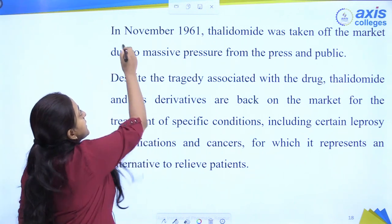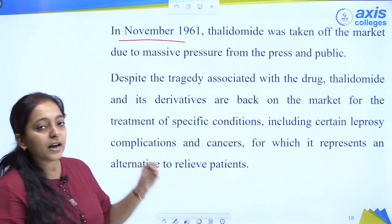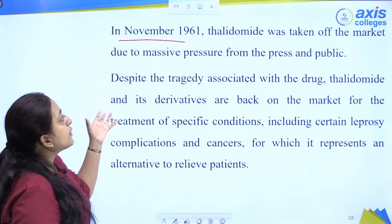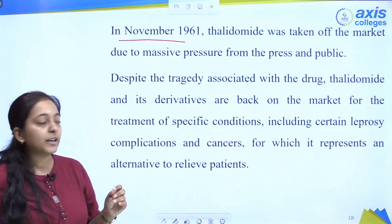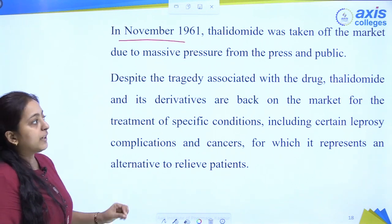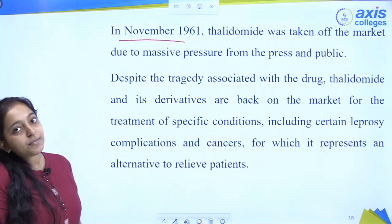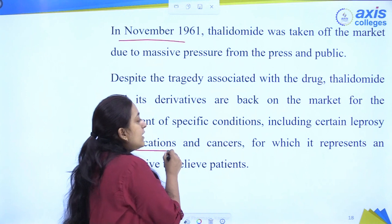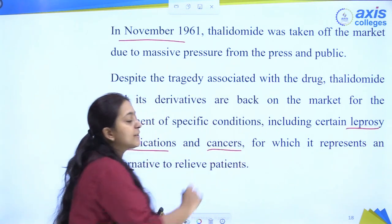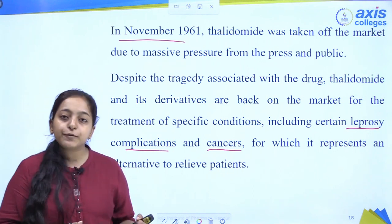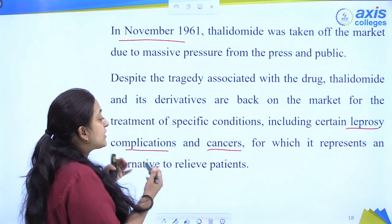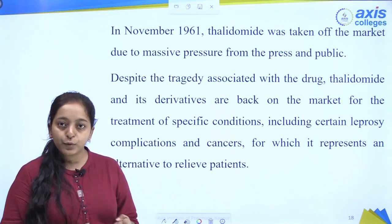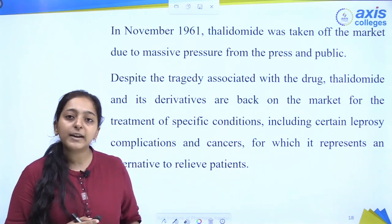Finally, in November 1961, thalidomide was taken off the market due to massive pressure from the press and the public. However, after this tragedy, thalidomide and its derivatives are again being used today for specific treatments — certain leprosy-related complications and cancers. The doses used are quite different from before, and the conditions for which they are used are also completely different, with further improvements made to these drugs.